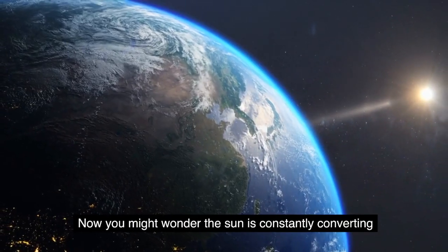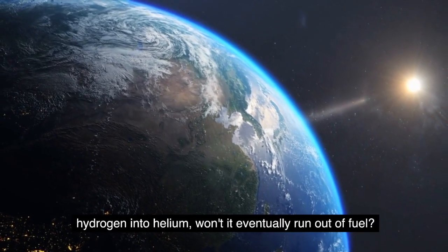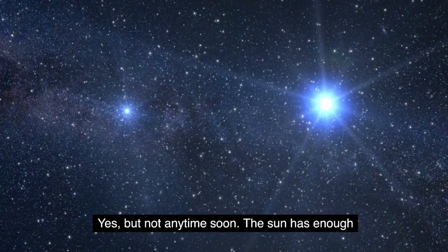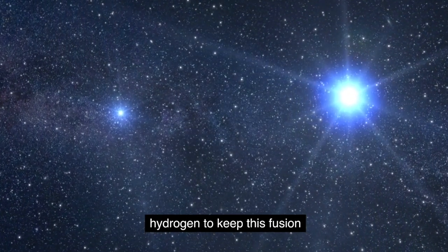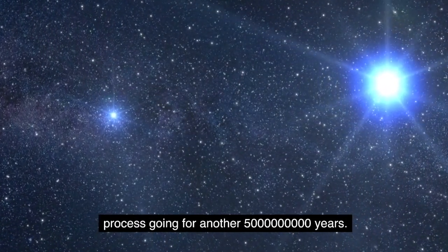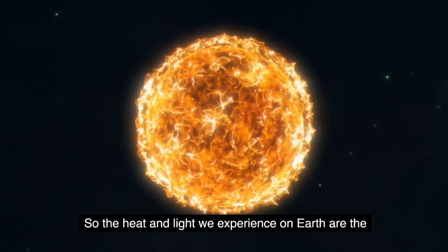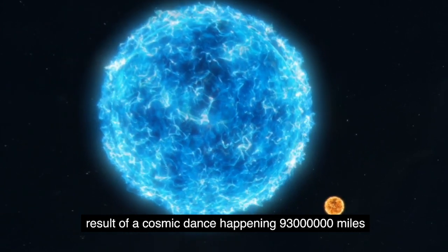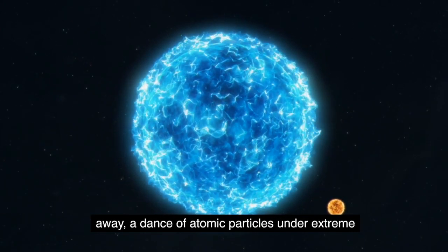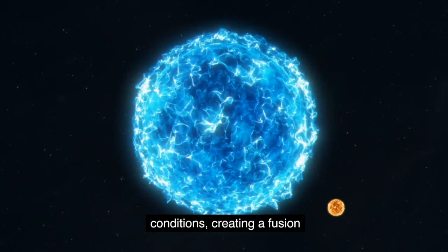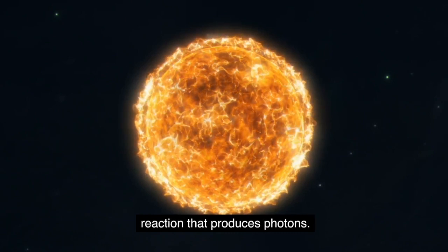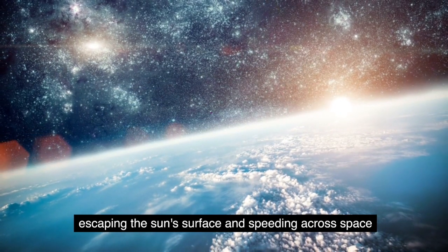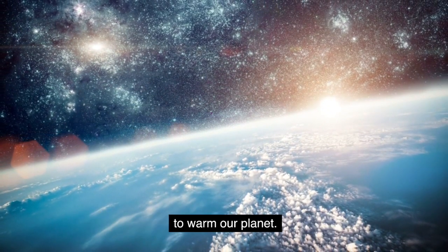Now you might wonder if the sun is constantly converting hydrogen into helium, won't it eventually run out of fuel? Yes, but not anytime soon. The sun has enough hydrogen to keep this fusion process going for another five billion years. So the heat and light we experience on Earth are the result of a cosmic dance happening 93 million miles away. A dance of atomic particles under extreme conditions, creating a fusion reaction that produces photons. These photons journey for thousands of years before finally escaping the sun's surface and speeding across space to warm our planet.